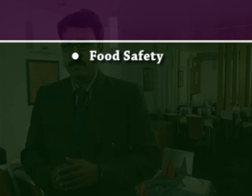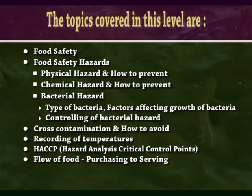Let's start with food safety. What is food safety? Food safety means preparing, cooking and storing food in such a way as to keep it free from harmful bacteria or toxins which can make food unsafe to consume. Food safety refers to the conditions and practices that preserve the quality of food to prevent contamination and foodborne illness.